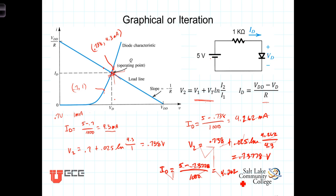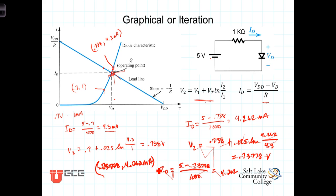We have now converged on our solution. The operating point, or bias point, for this circuit is a diode voltage of 0.73778 volts and a current of 4.262 mA.